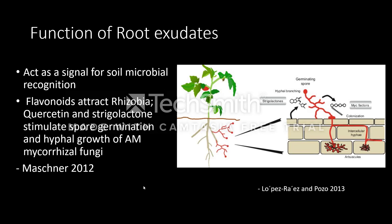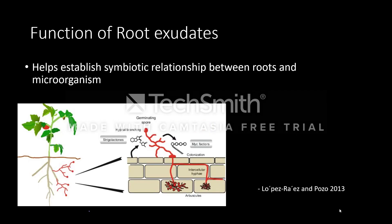One function is to act as a signal for soil microbe recognition. Root exudates contain certain metabolites that attract and screen for specific soil microbes. An example is when roots exude flavonoids to attract rhizobia, and quercetin and strigolactones to stimulate the germination of AM fungal spores. During low phosphate conditions, strigolactones are produced in the roots. When detected by AM fungi, spore germination and hyphal branching is triggered.